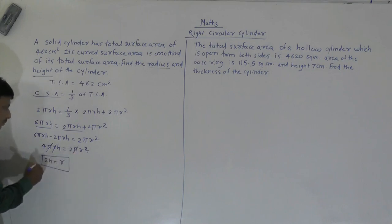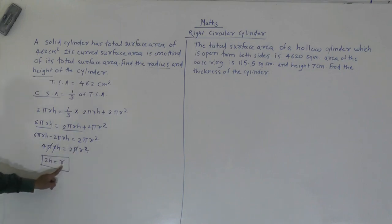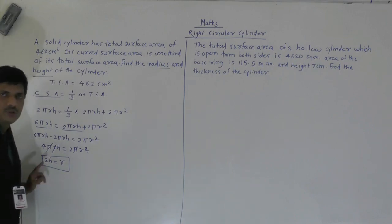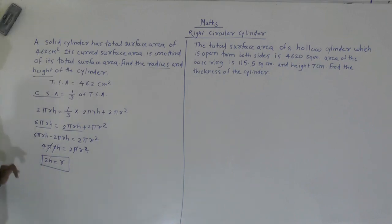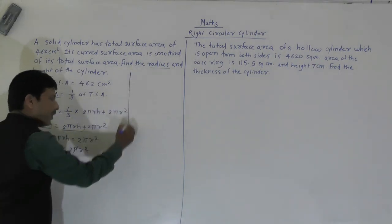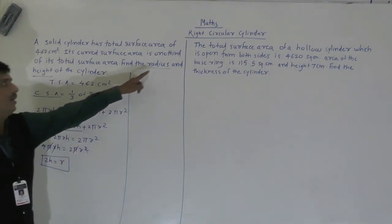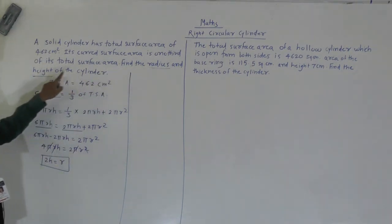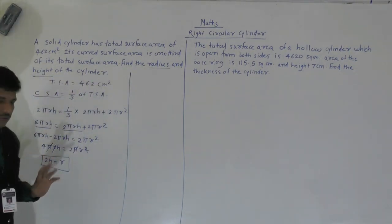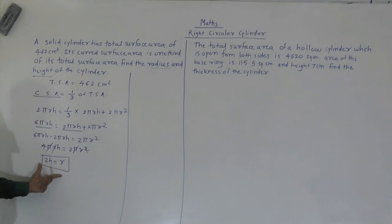So we got the relation: two H equals R, which means radius is equal to two times H. This is not our final answer — we still have to find the radius and height of the cylinder. So we got the relation R equals 2H.